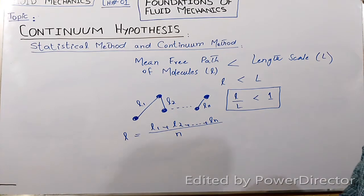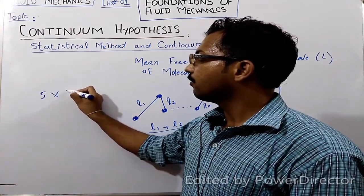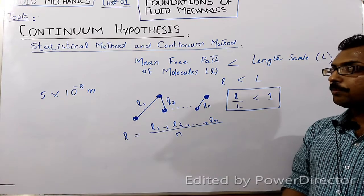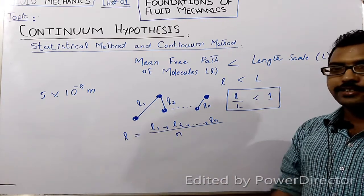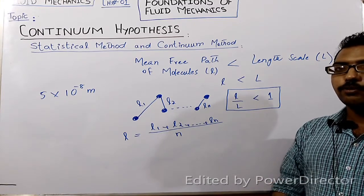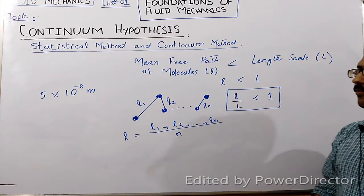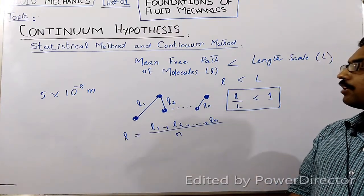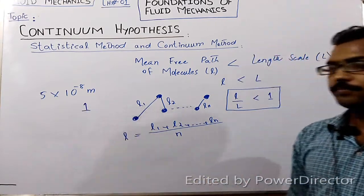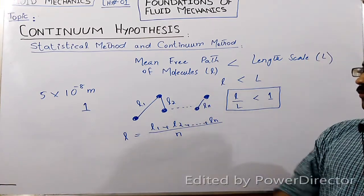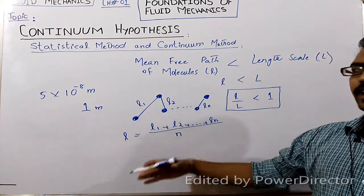For example, molecules of standard atmospheric air have a mean free path of 5 × 10⁻⁸ meters, which is definitely much smaller than the size of a macroscopic system. So for light gases such as air, and for liquids, we can use the continuum hypothesis. However, in special cases — for example, at upper altitudes of the atmosphere — the mean free path of air molecules is of order 1 meter or greater.